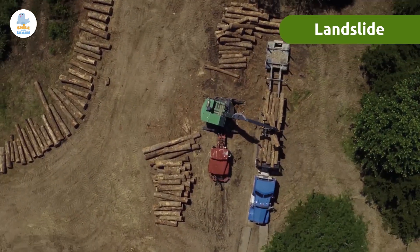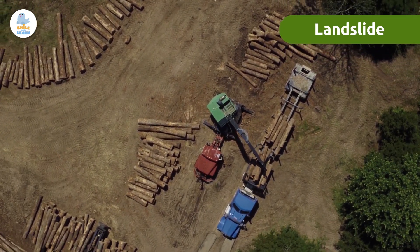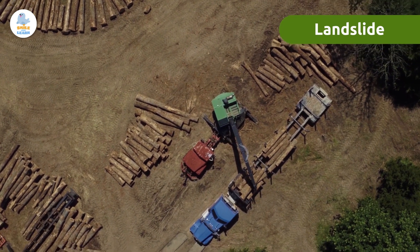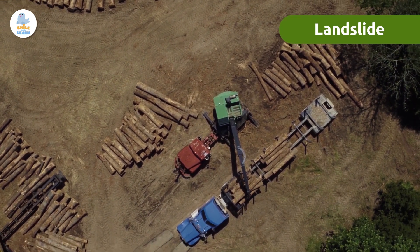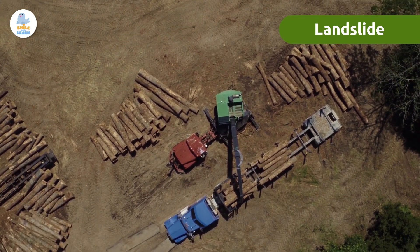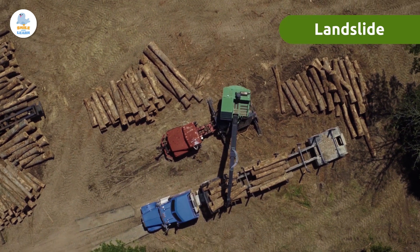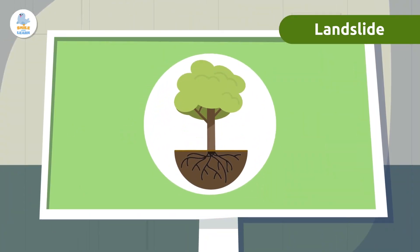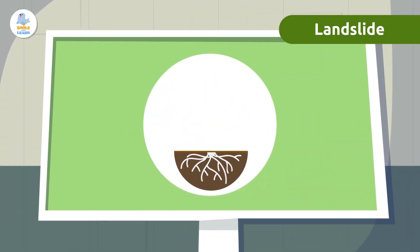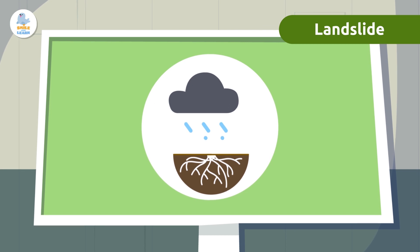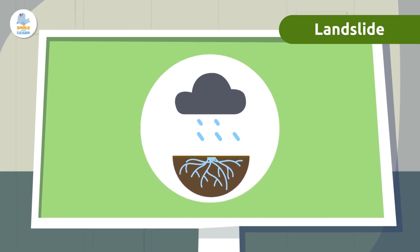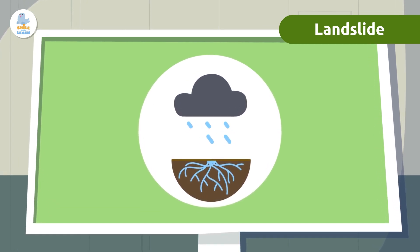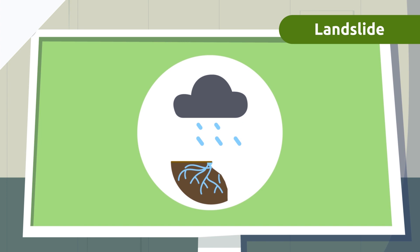Like in other natural disasters, human action can intensify the severity of this phenomenon. Deforestation is one of the triggers. When there are no roots to help hold the soil components together, the ground becomes wet due to rainfall and these land shifts occur.